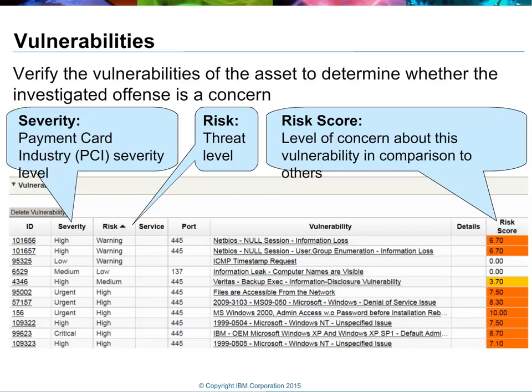Each asset record will also have a vulnerability section. Information about a vulnerability can only be brought in from an enterprise scanner, either through IBM's own scanner or through a third-party scanner. You'll see a variety of columns associated with these vulnerabilities. The severity column corresponds to PCI's own ranking. The risk is the relative threat of the vulnerability. The service column shows what system or service the vulnerability is associated with. The port shows the port number where the vulnerability was detected, and the vulnerability column contains specific links to the details for each detected vulnerability. There's also a details field showing a description and the CVSS base score. Note that the vulnerability listing will only be as good as the last time the enterprise scan ran.